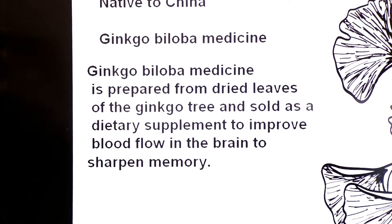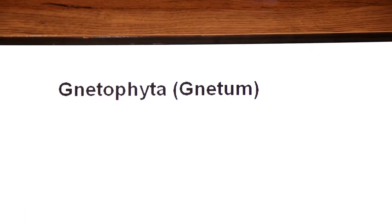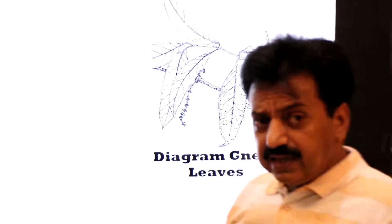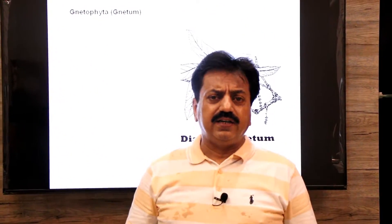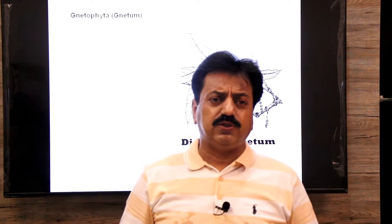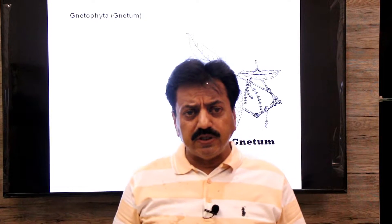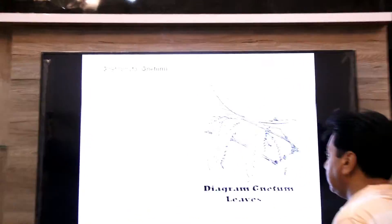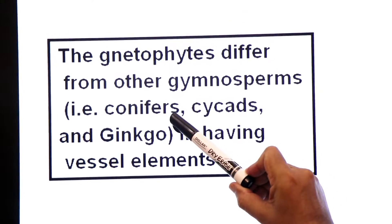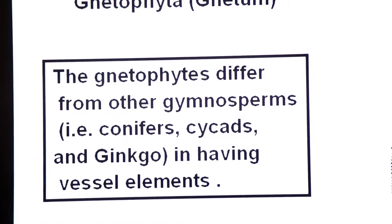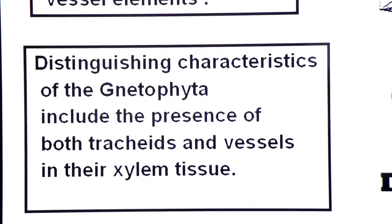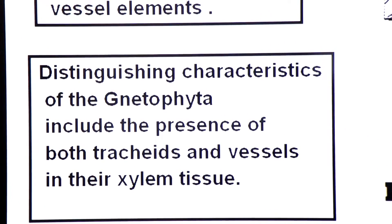Aab hum aate hain Gnetophyta ki taraf, jis ka ek genus hai Gnetum. This is the diagram showing the leaves of Gnetum. Is division ka ek distinguishing character yeh hota hai ke xylem mein do elements hote hain — tracheids aur vessels. Usually gymnosperms mein vessels nahi paye jate, magar is division mein tracheids ke sath sath vessels bhi paye jate hain. This is the distinguished character of Gnetophyta. Examples include Gnetum and Ephedra.